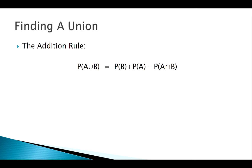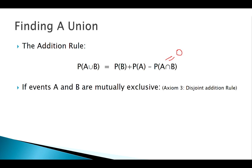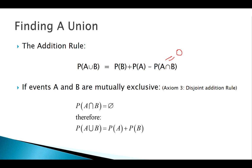So our addition rule looks like this: the probability of A union B equals P(A) plus P(B) minus P(A intersection B). If they are disjoint, that intersection is essentially zero — so it's like subtracting zero. That's basically what our disjoint addition rule says: A plus B minus zero. Unions are easy enough; we just have to remember, are they mutually exclusive or not?